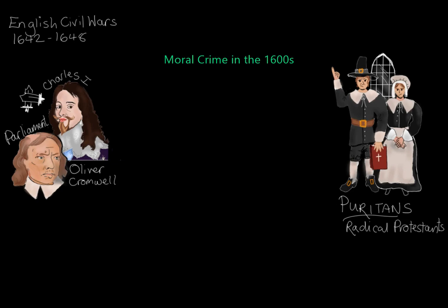Charles is put on trial for treason by Parliament, found guilty, and publicly executed by beheading. Then, between the years of 1649 and 1660, there is no king of England. Instead, Parliament runs the country under the leadership of Oliver Cromwell, who is now known as the Lord Protector of England. This period is called the Protectorate. Cromwell and a lot of MPs are Puritan.